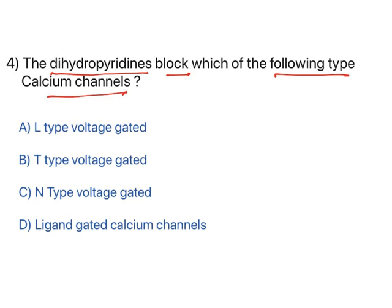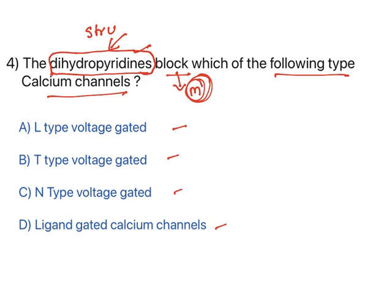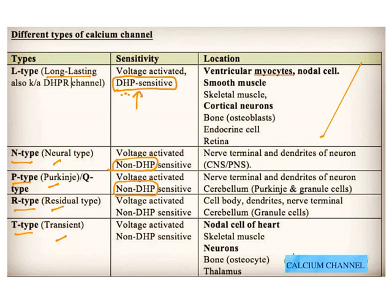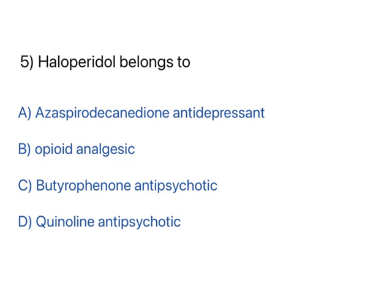Next question: 'Dihydropyridines block which type of calcium channel?' The options include L-type, T-type, N-type, and ligand-gated channels. All calcium channel blockers block L-type voltage-gated calcium channels. L stands for 'long-lasting.' L-type channels are sensitive to dihydropyridines. Other types — N (neural), P (Purkinje fiber), R (residual), T (transient) — are not sensitive to dihydropyridines, so only L-type is affected.